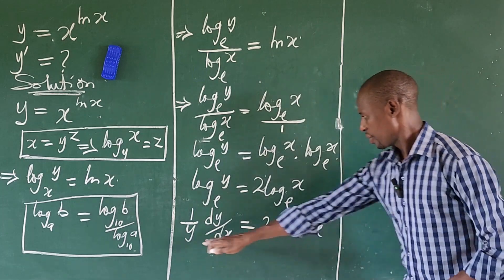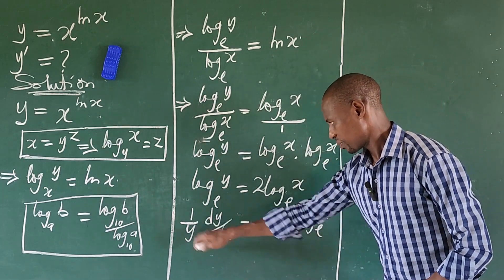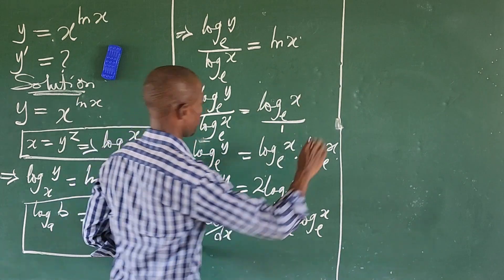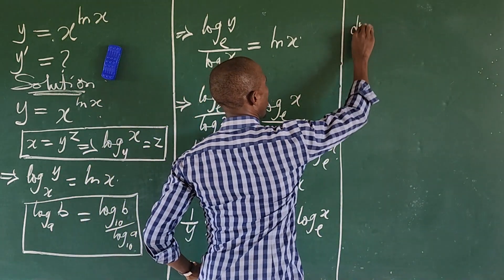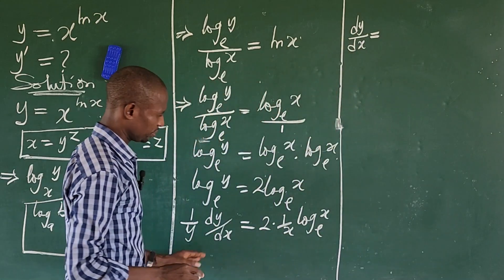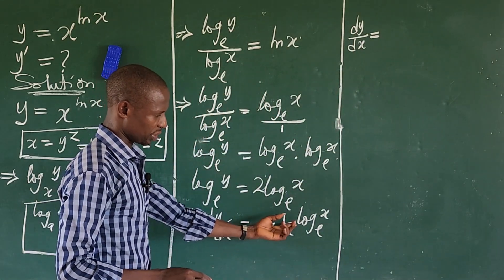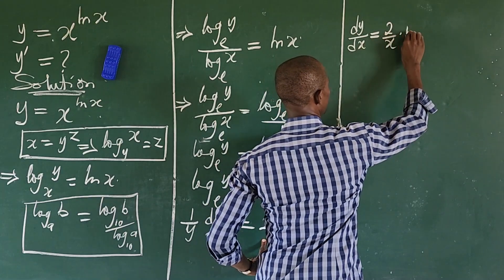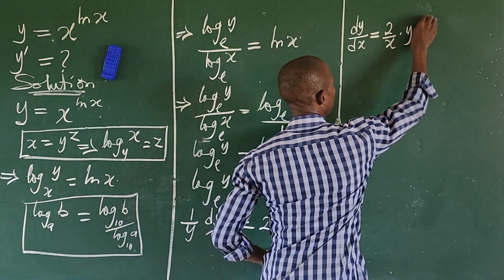What we do here now, we eliminate this y here, we multiply both sides by y. So if we do that, then this will give us dy/dx equals, we're using y to multiply everything here, so we're going to have two over x times y times log x base e.